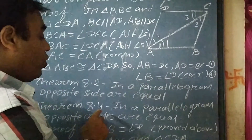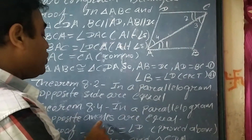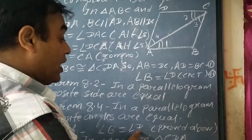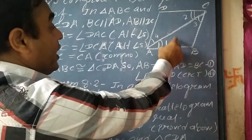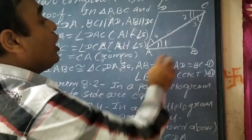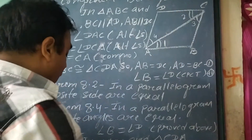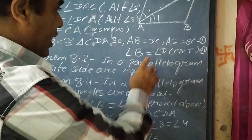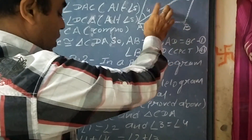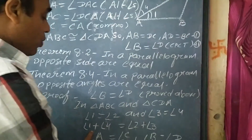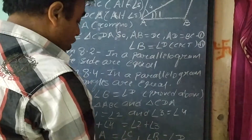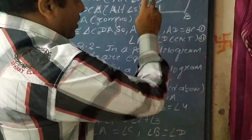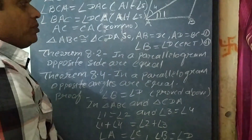Now theorem 8.4: in a parallelogram, opposite angles are equal. We have proved that angle B equals angle D, as they are corresponding parts of congruent triangles. In triangles ABC and CDA, angle 1 equals angle 2, and angle 3 equals angle 4. So angle 1 plus angle 4 equals angle 2 plus angle 3, giving us angle A equals angle C, and angle B equals angle D, as shown in the above proof.